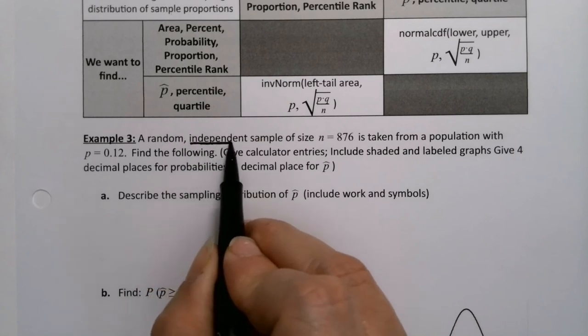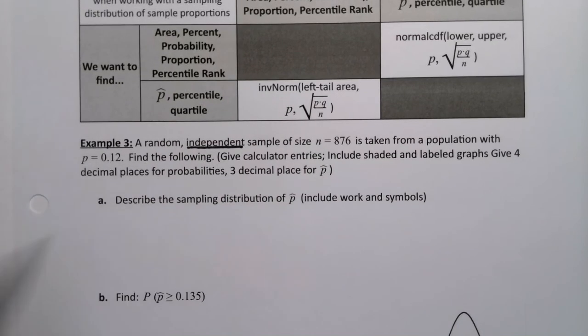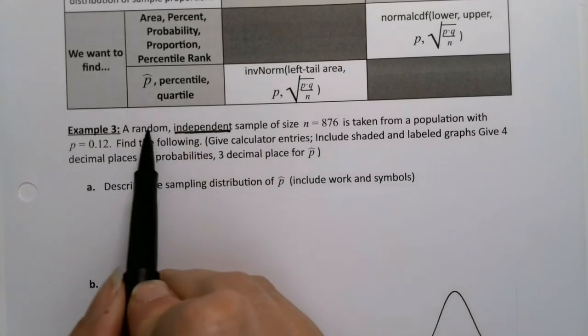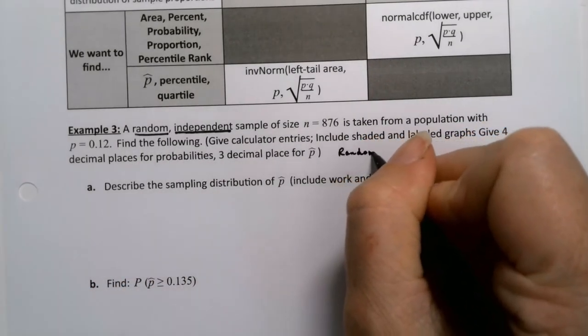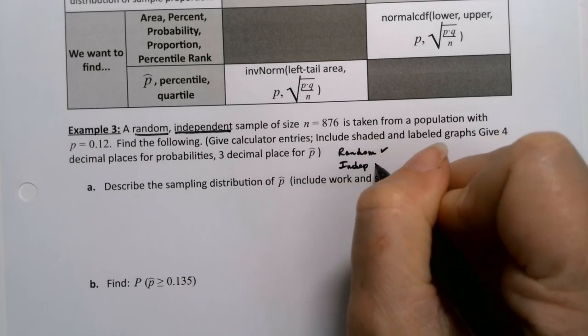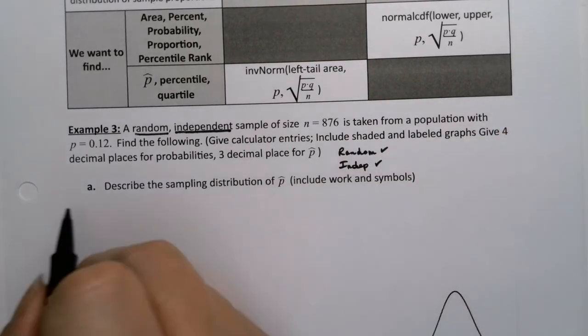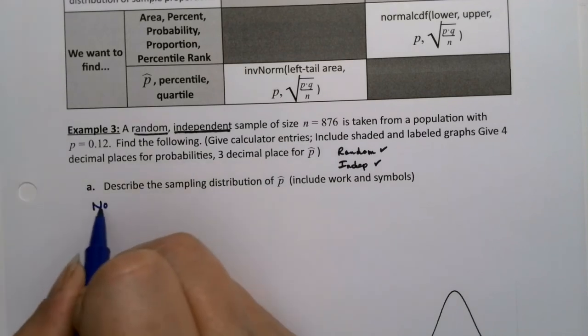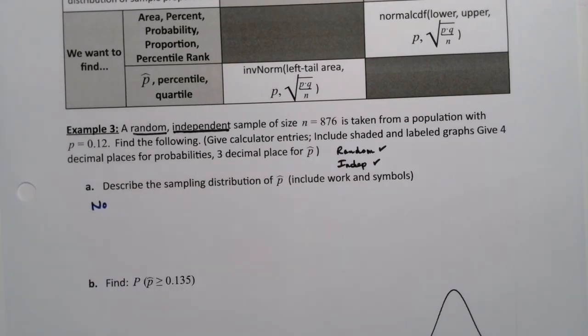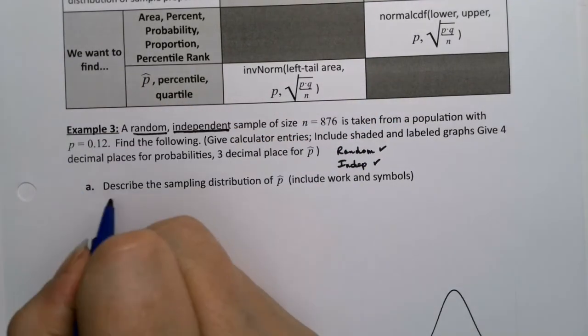In the fall of 2020 I have the wrong word here, so it should say a random independent sample. So just fix that. A random independent sample of size n equals 876 is taken from a population with p equals 0.12. Find the following and give all the calculator entries. You'll notice I have random and I have independent—we have conditions one and two given to us, no problem. What we need is normal.